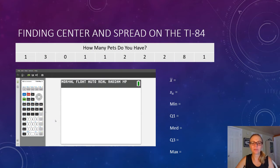The data in the table represents the answers to the question, how many pets do you have? We're going to find the statistical measures that you see listed over here on the right. We're going to find all of those on the calculator. So let's watch this little video.